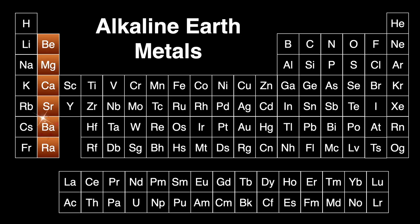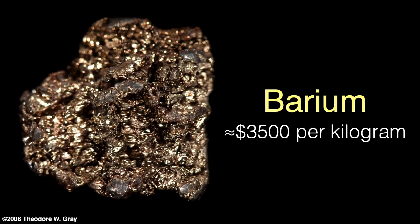Moving along to the metallic element rather than its minerals: barium is a member of the alkaline earth metals group of the periodic table. These metals are somewhat reactive but not as much as their cousins in the column to the left — the alkali metals. As with most elements, the price of barium varies widely with purity and quantity; 99 percent pure barium goes for about $3,500 per kilogram, more expensive than many other elements we've seen in this series.